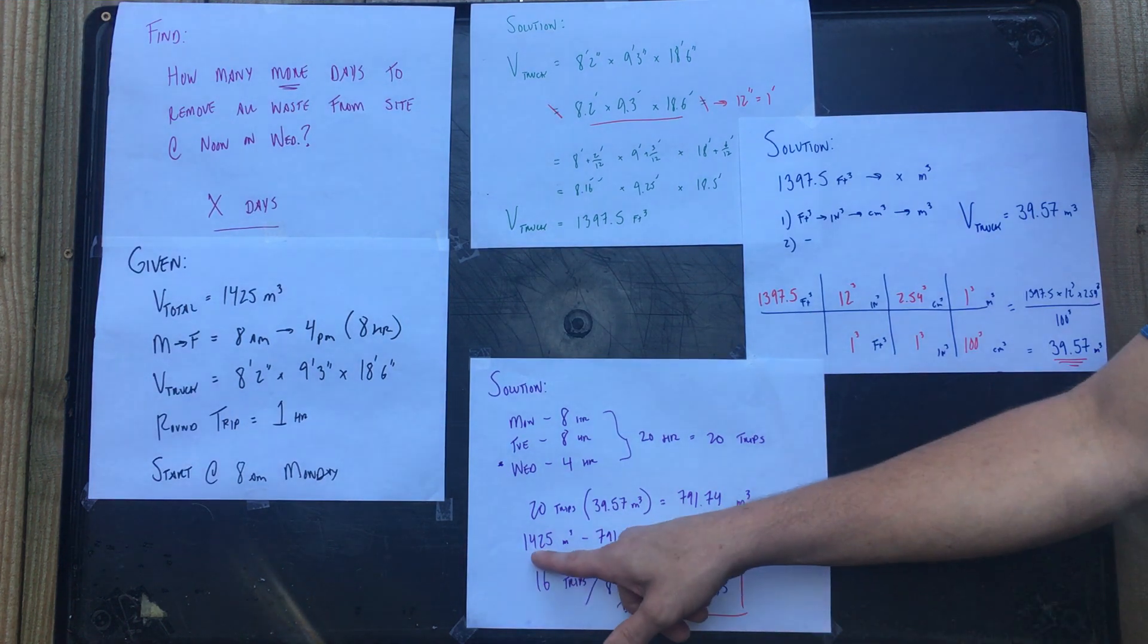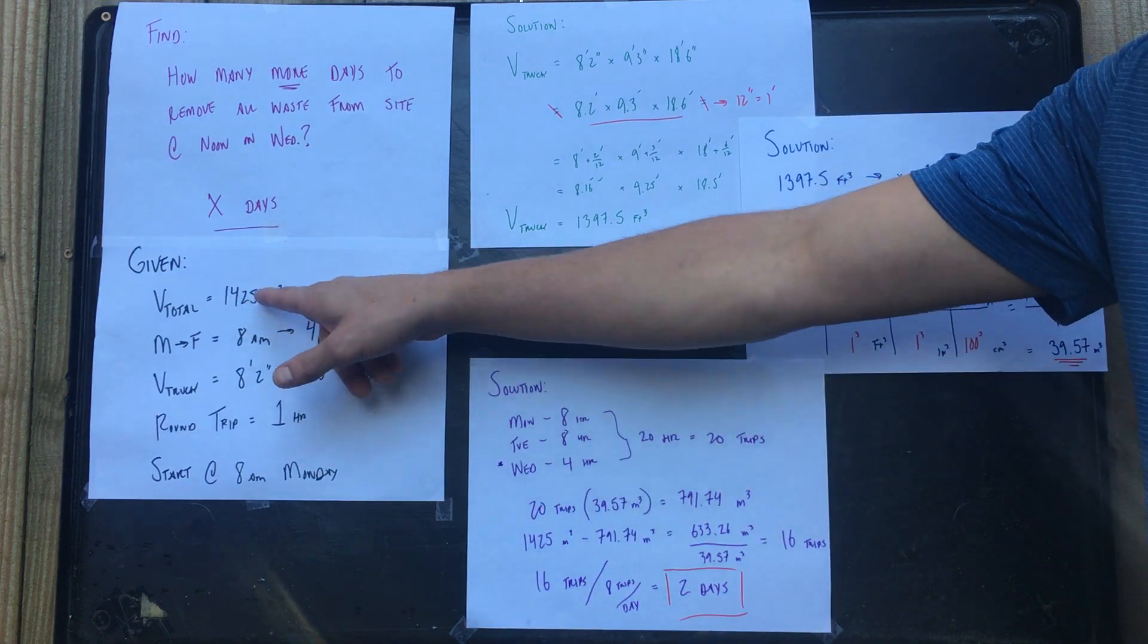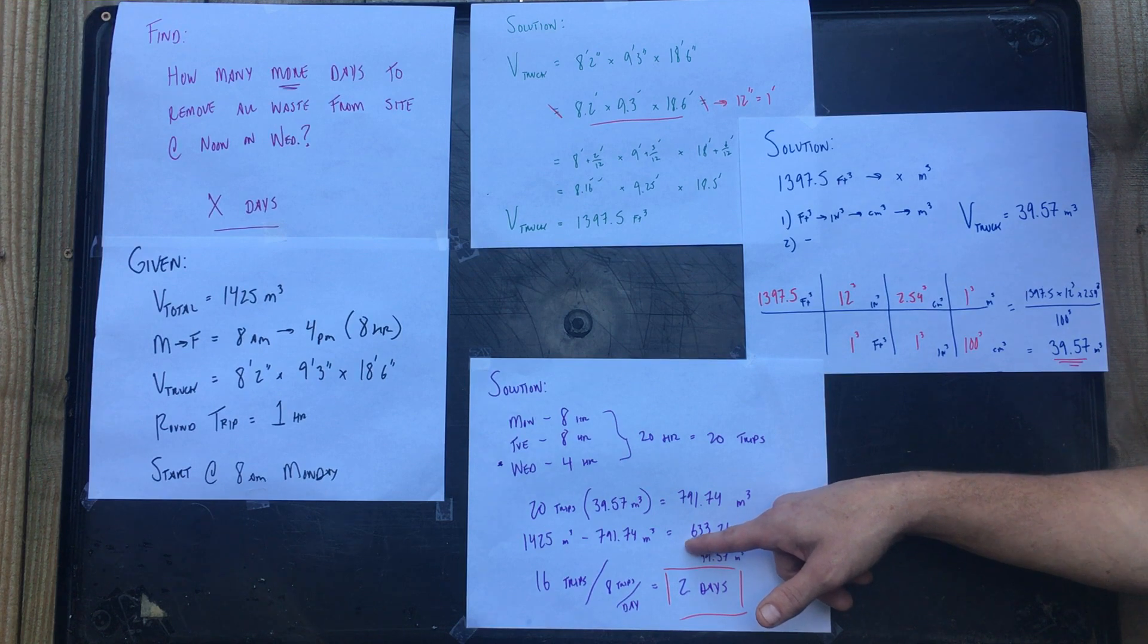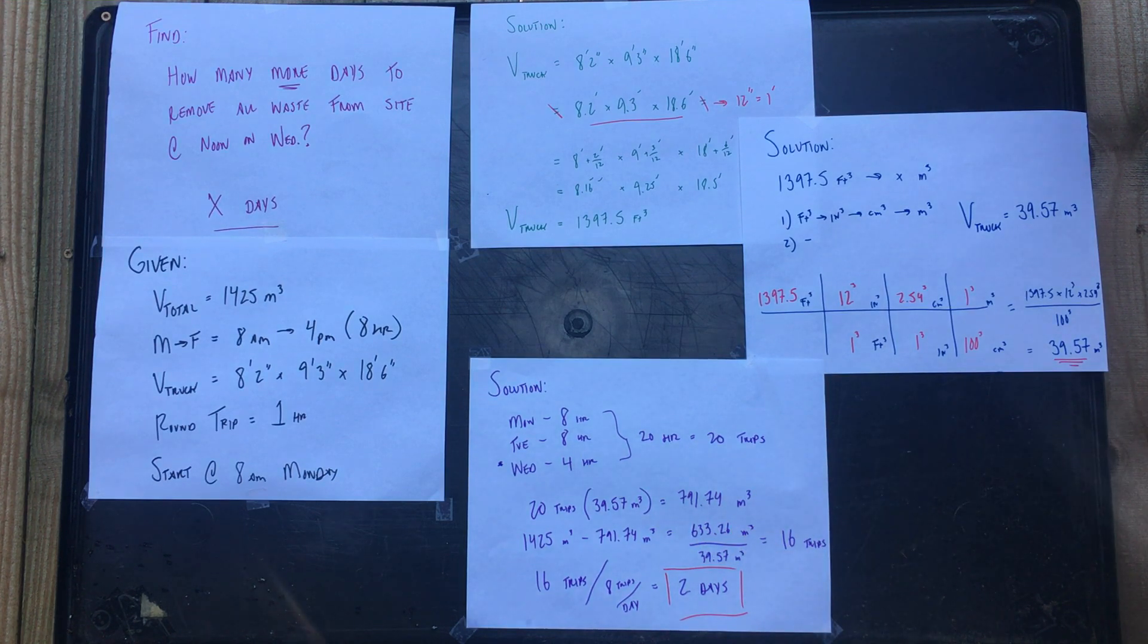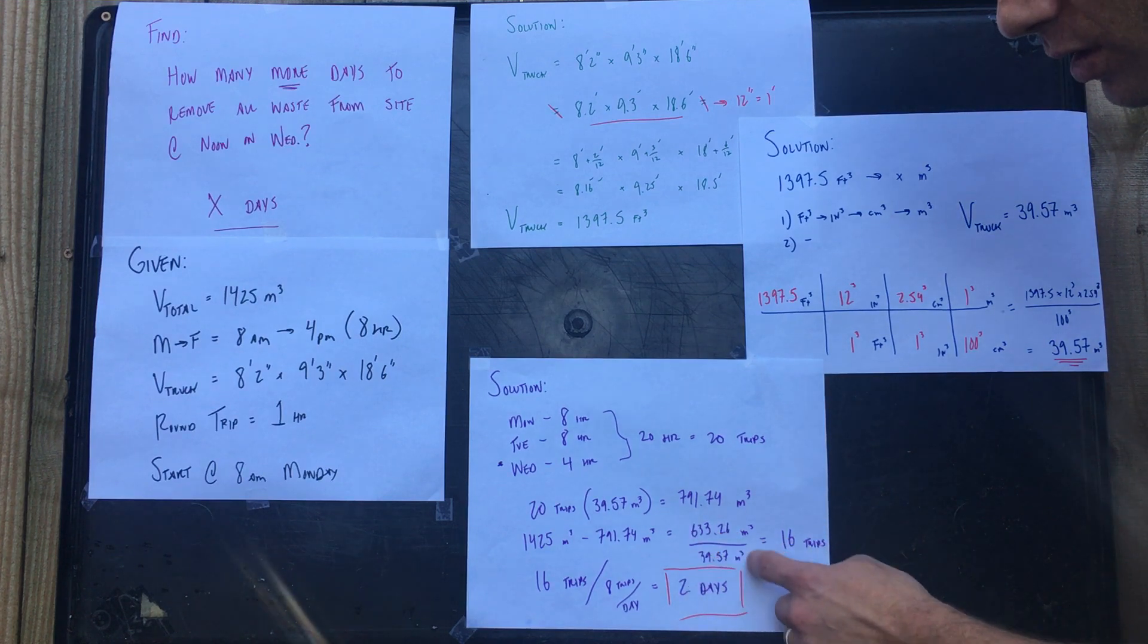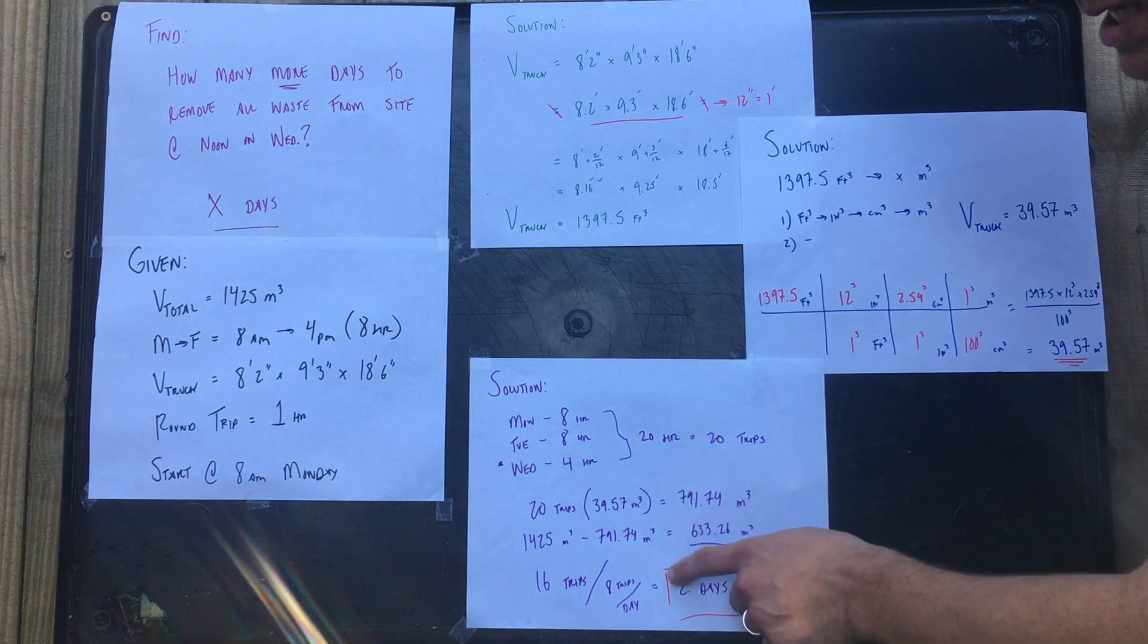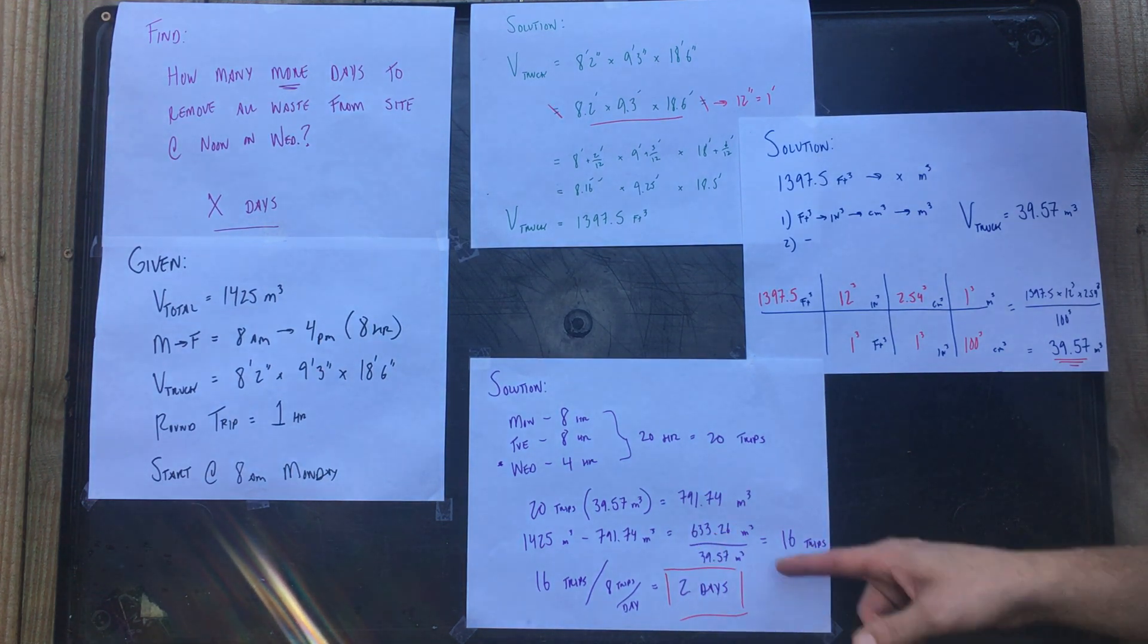Well, we know the volume total is this, so we subtract what we have moved. So at noon on Wednesday we have 633.26 cubic meters left. But when you decide how many more truckloads that's gonna take, that's gonna take 16 trips. You're gonna realize you need to back-calculate these problems.